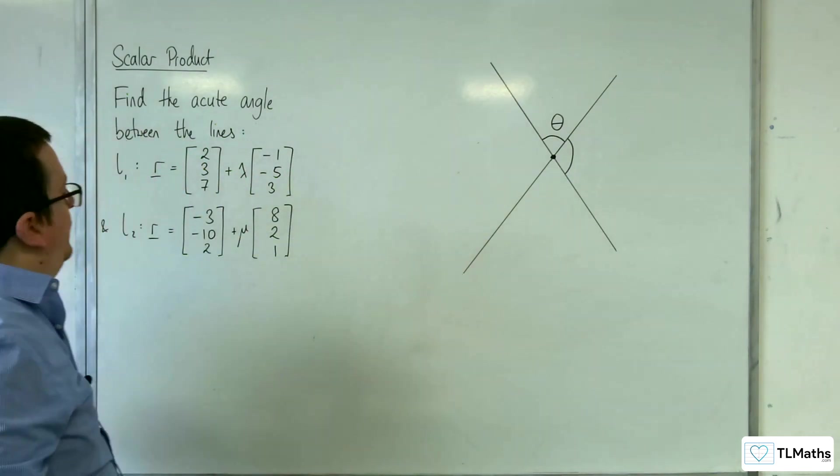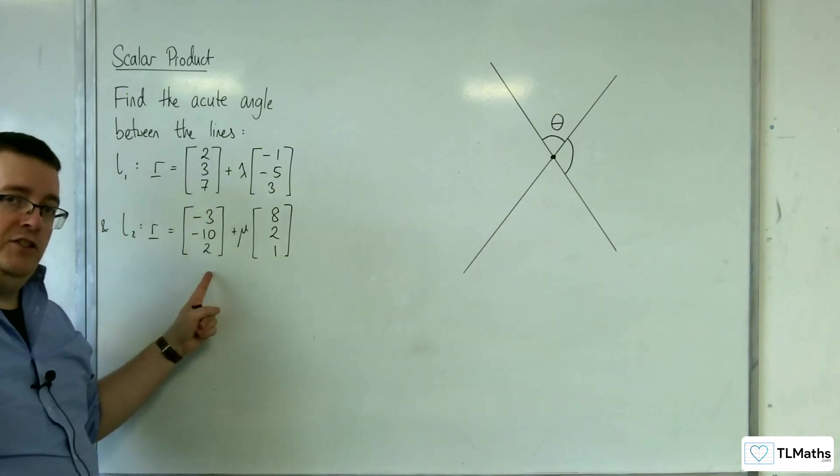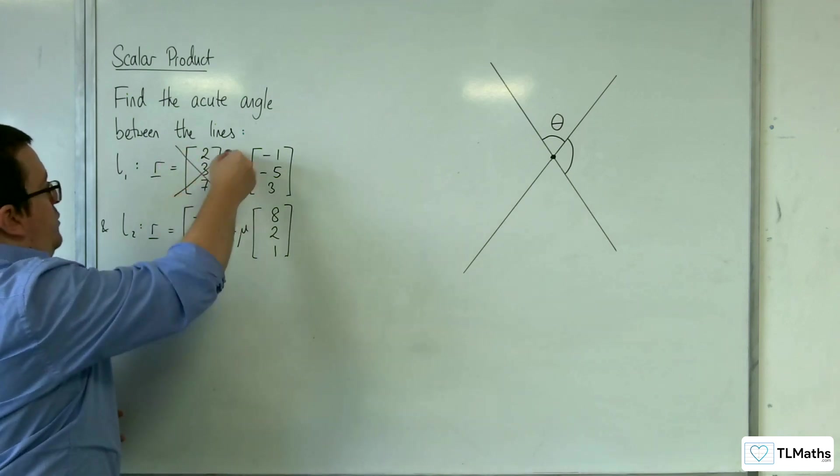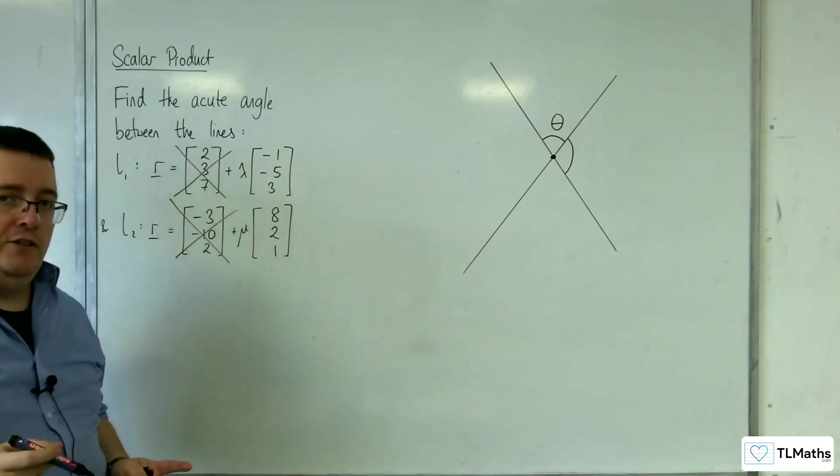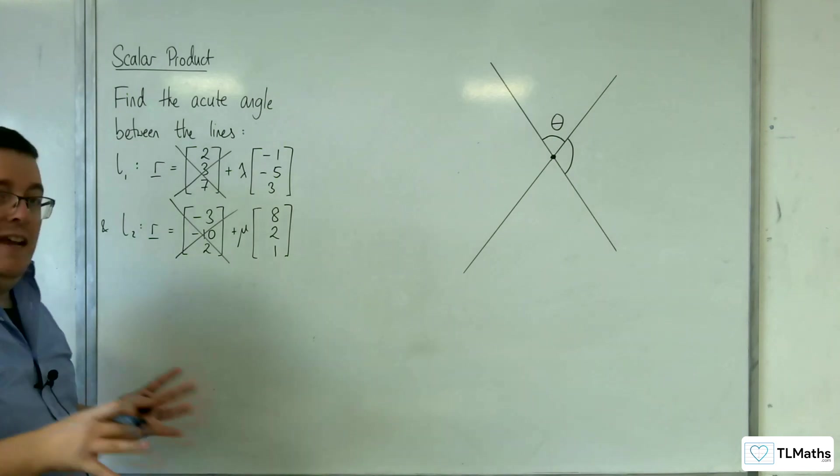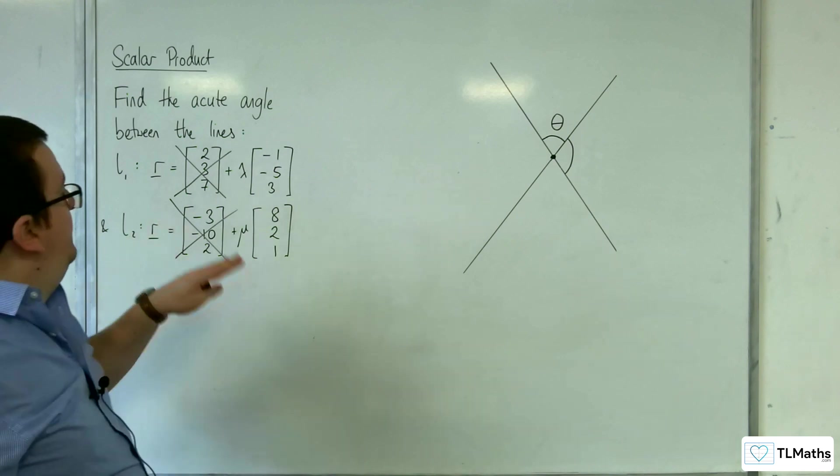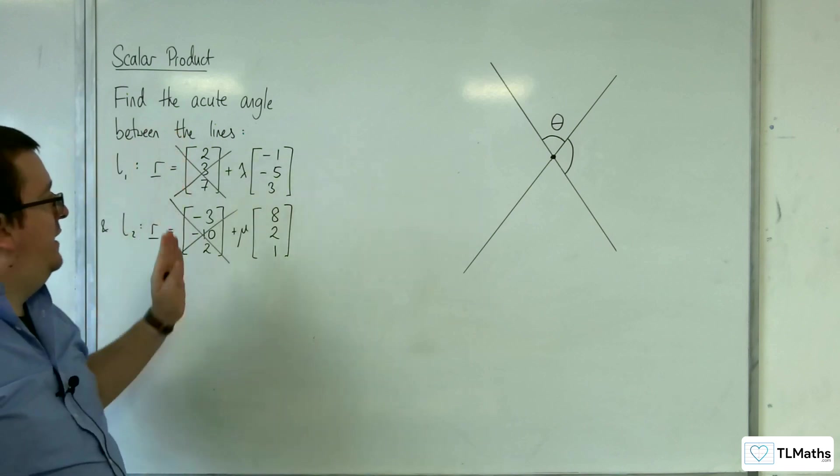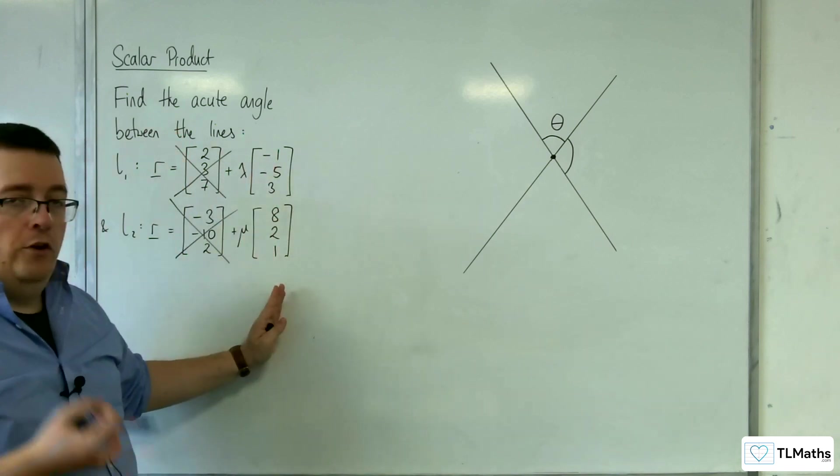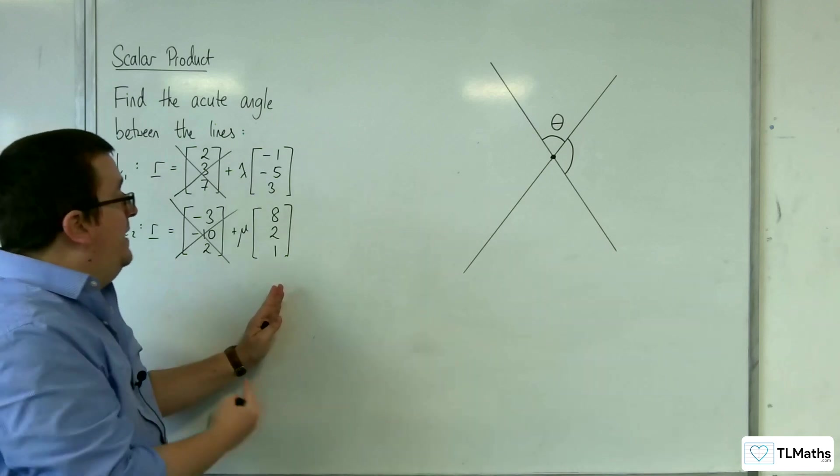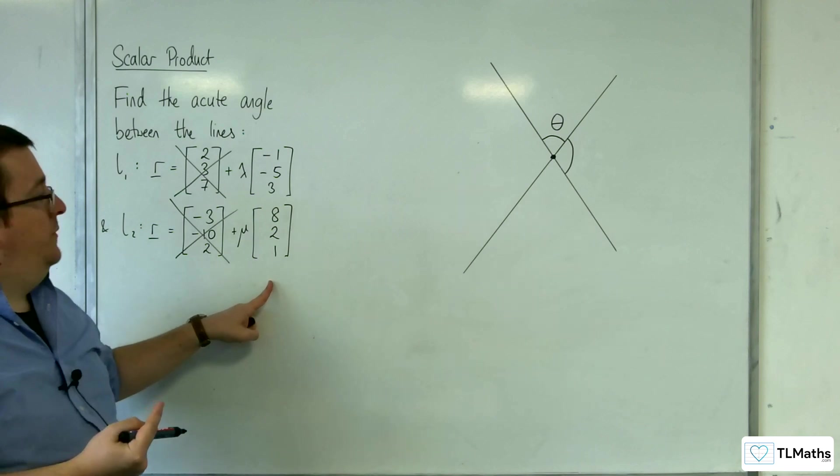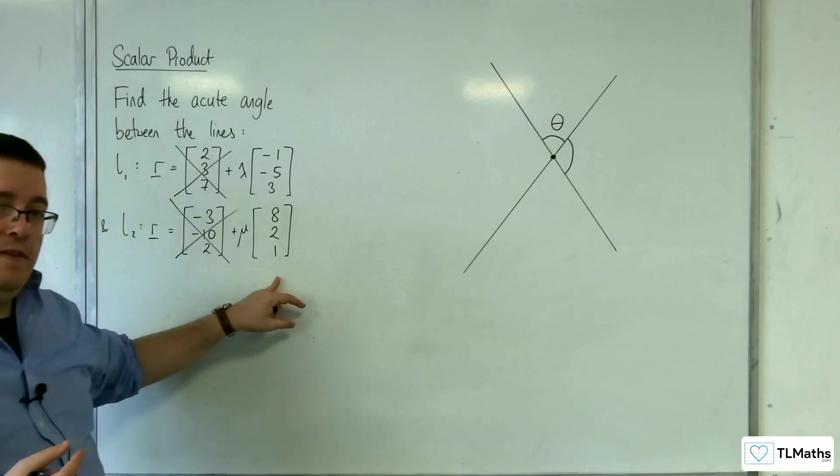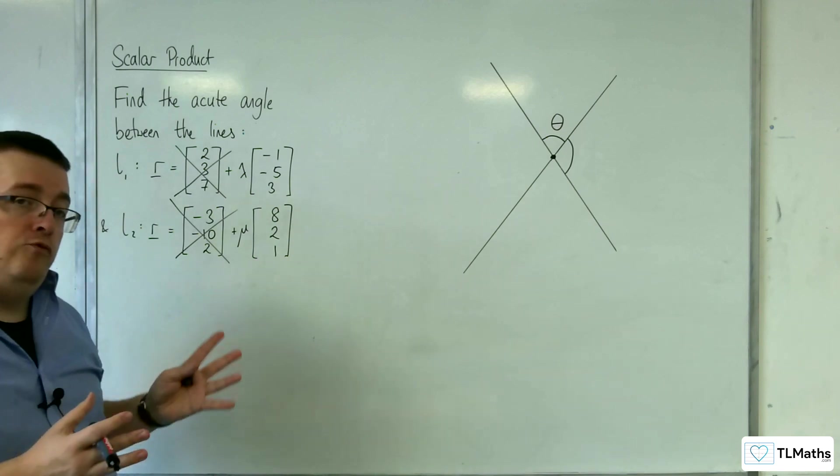Now, the consequence of doing this is that these position vectors that we have for these two lines do nothing for us. We can completely ignore the position vectors for these two lines. All you are interested in is their directions. So effectively moving it to the origin is just ignore the position vectors. You don't want to take any consideration of those. All you want to do is focus in on the direction vectors. And you're just finding the angle between these two. So all we need to do is use the scalar product to find the angle between those two vectors. That's all this problem reduces down to.